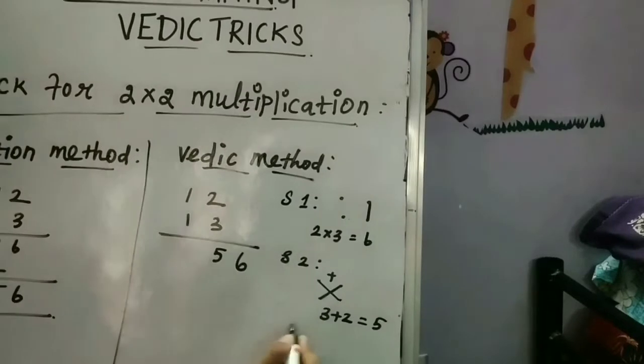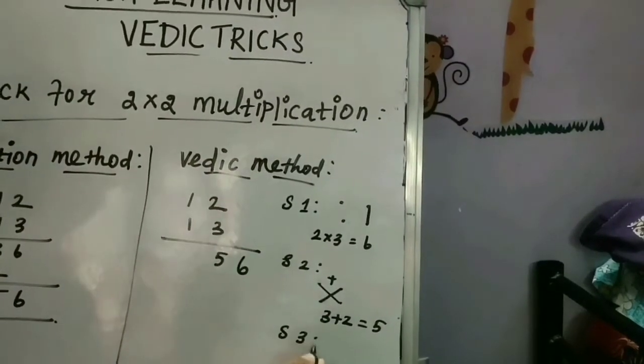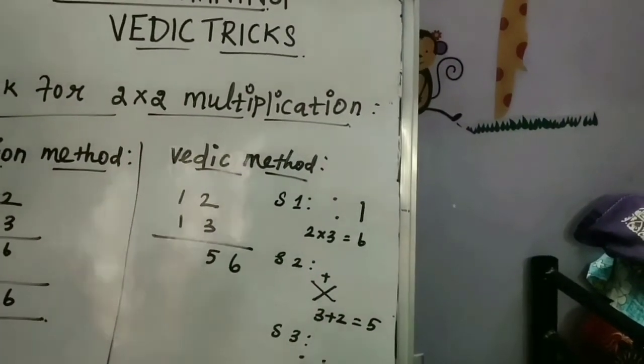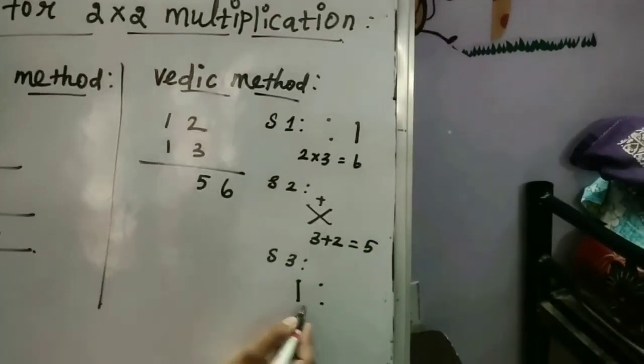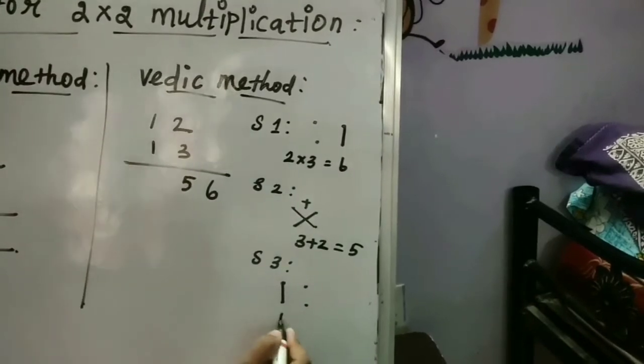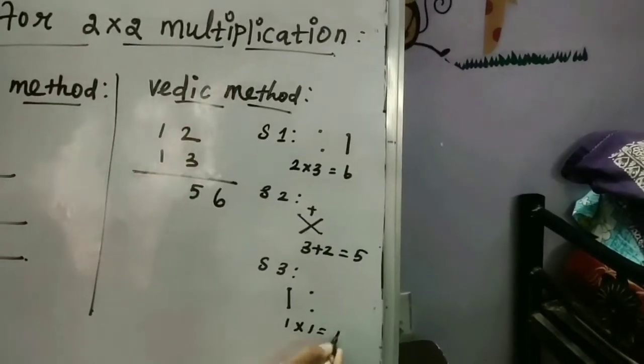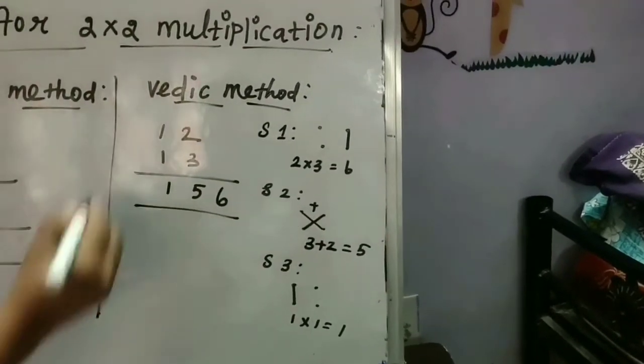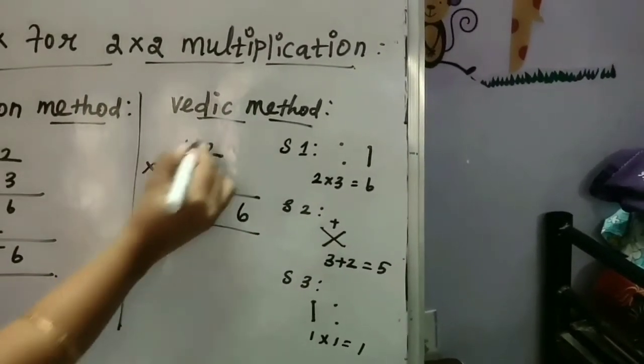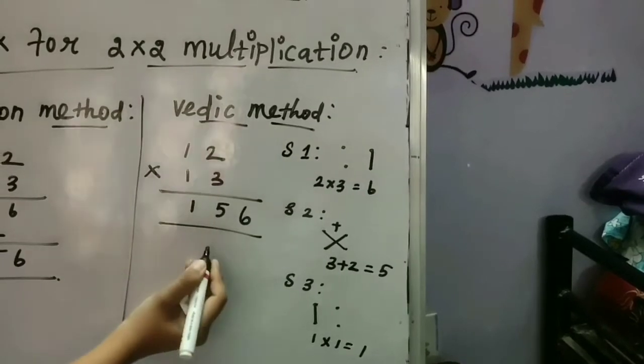So 3 plus 2 is 5. Write the 5 in the next tens place. Then step 3: In step 3, the same two digits followed by the two digits. The last step, we should multiply these two numbers, which means 1 into 1, which is 1. So the answer is 156.